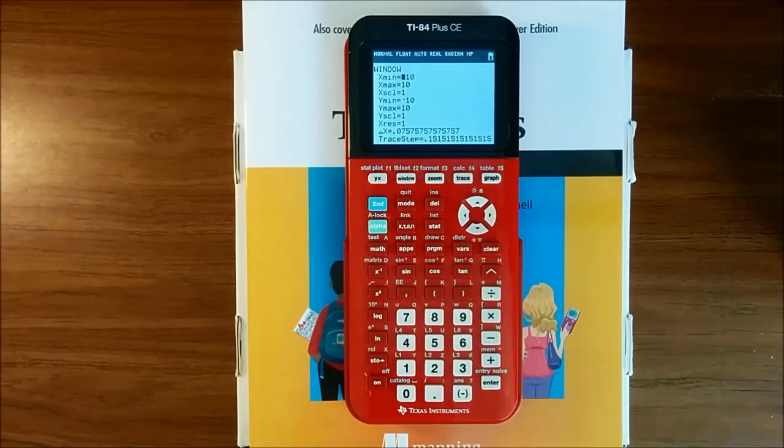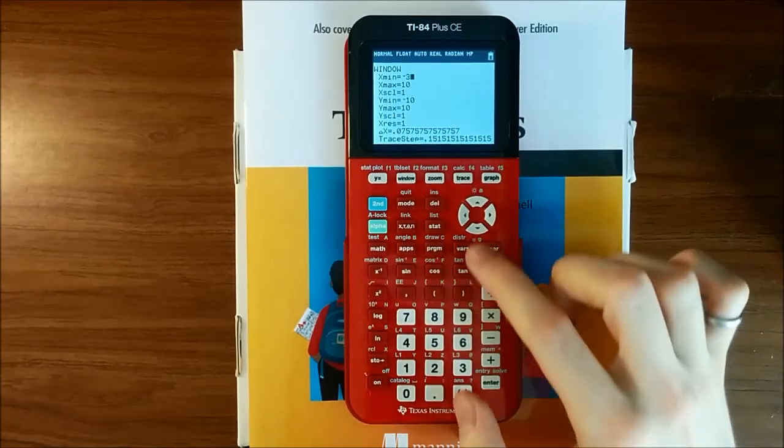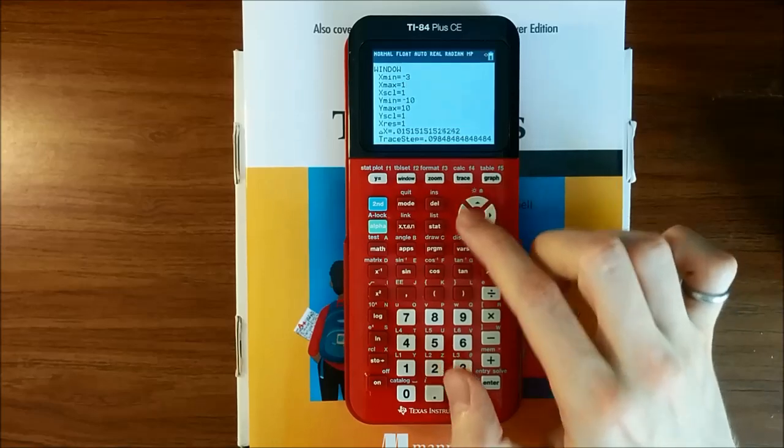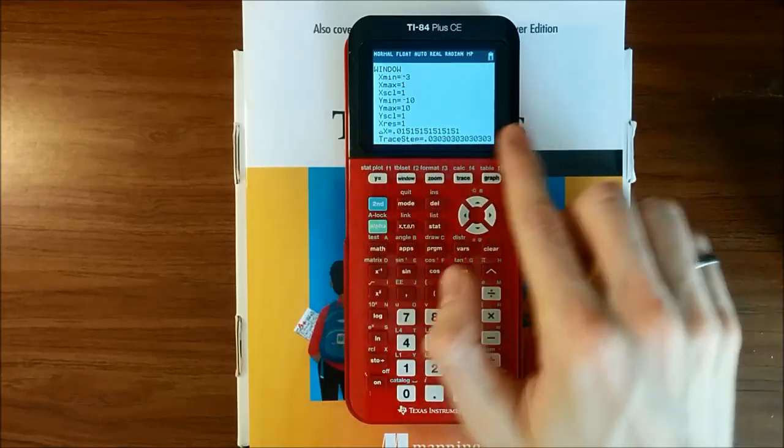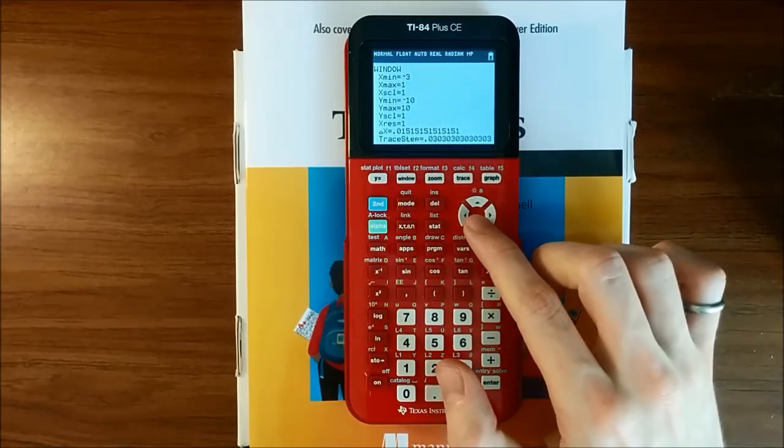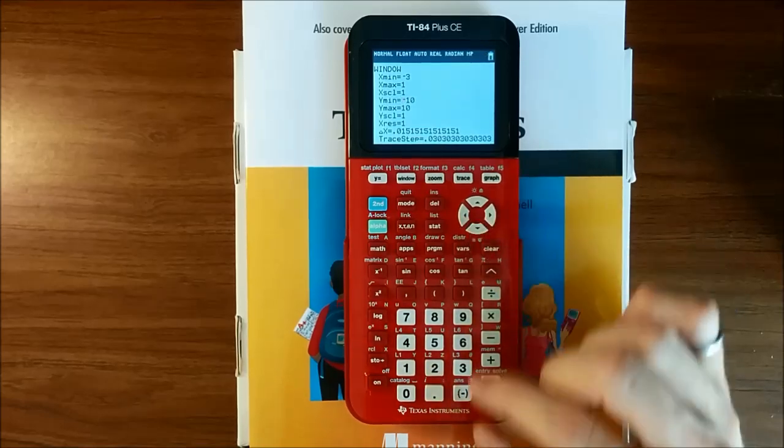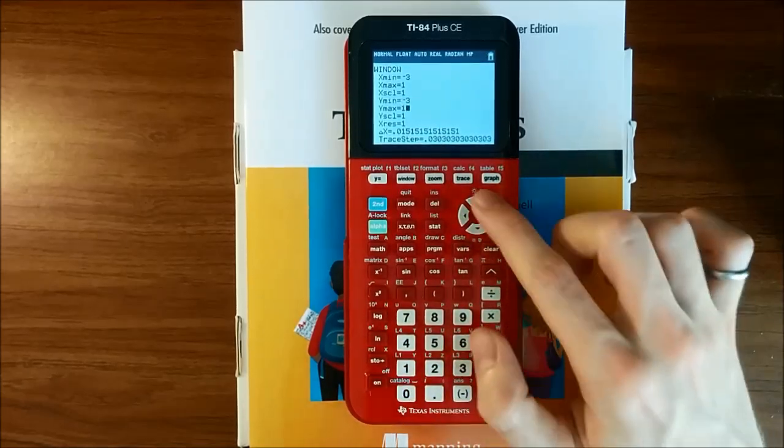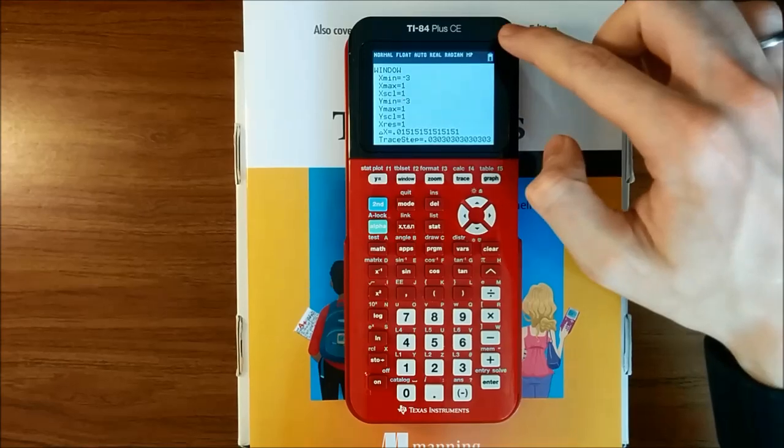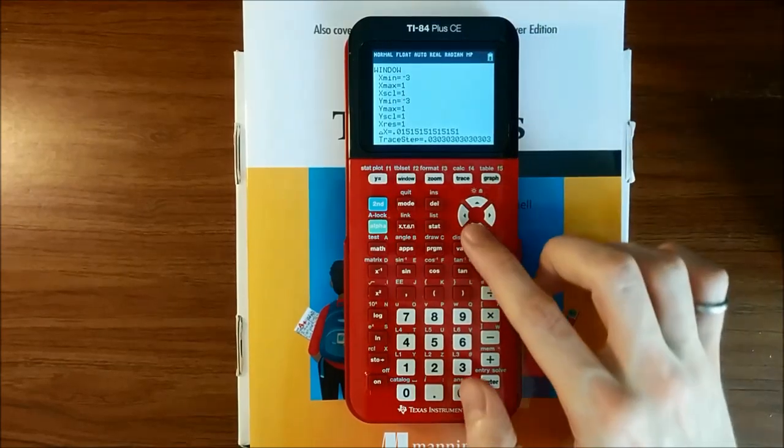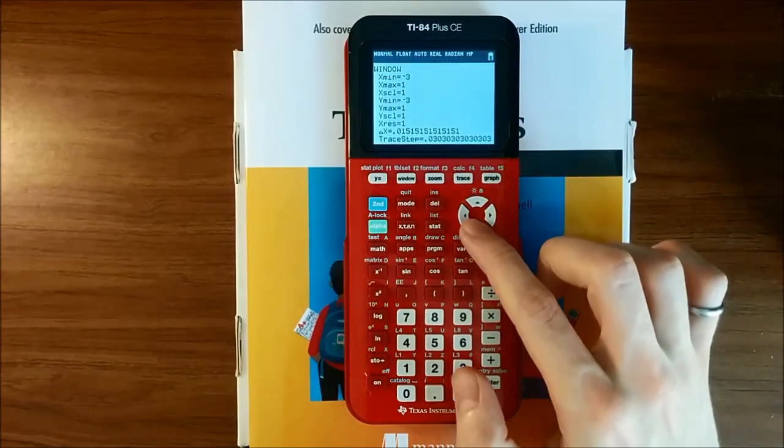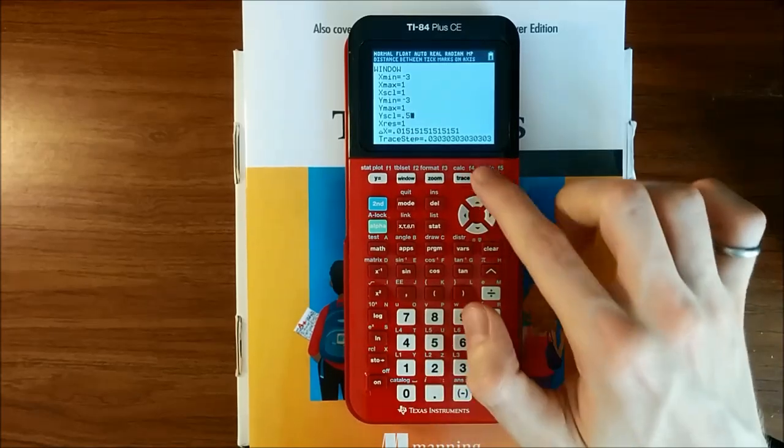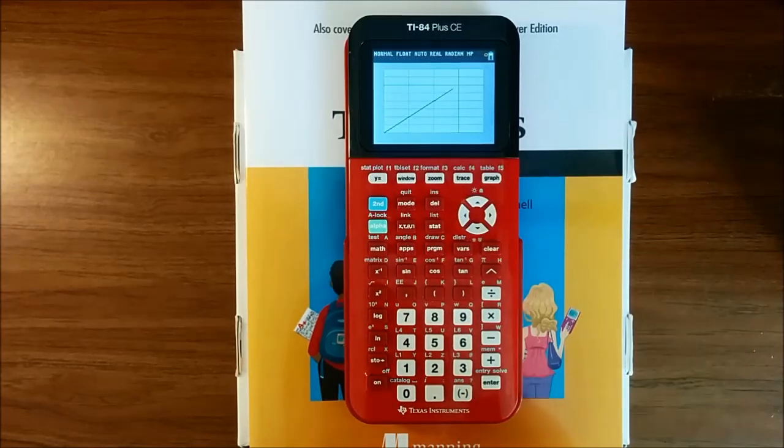So if we want to focus on the point x equals negative one, y equals negative one, let's try setting x min to negative three and x max to one. This will be an area of four units wide around the point in x, and then we'll set the y bounds to the same. That'll also be, so now we'll have four units wide and four units tall. And let's set our y scale to 0.5.